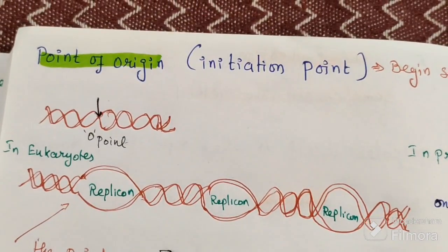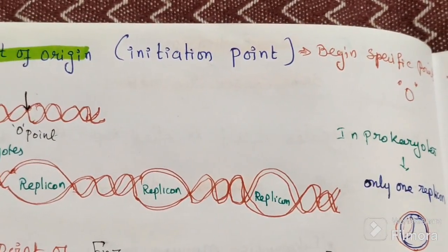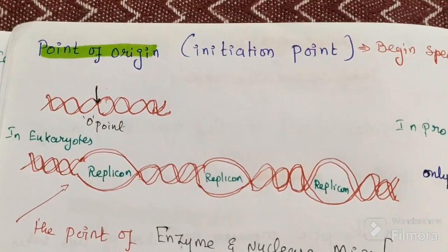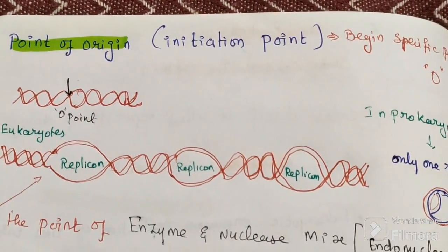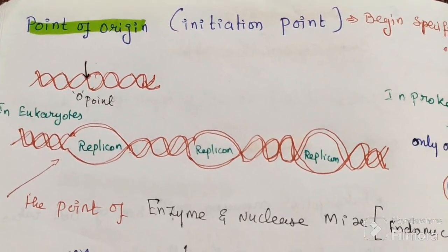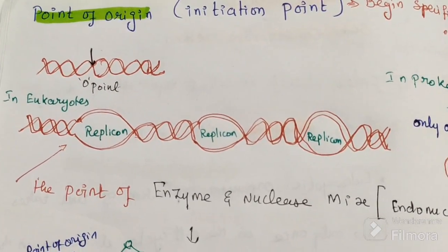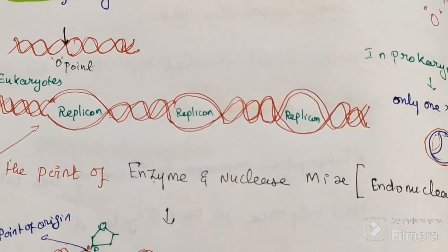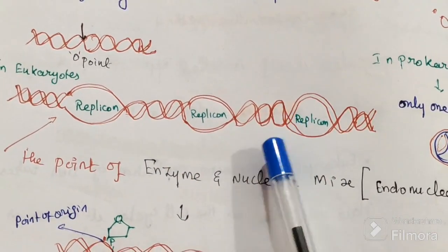Next, the point of origin — the initiation point. Replication begins at a specific point O. This is where DNA replication takes place, and it is also called a replicon. In eukaryotic cells, there are several replicons, meaning several points of origin. In prokaryotic cells, there is only one replicon.